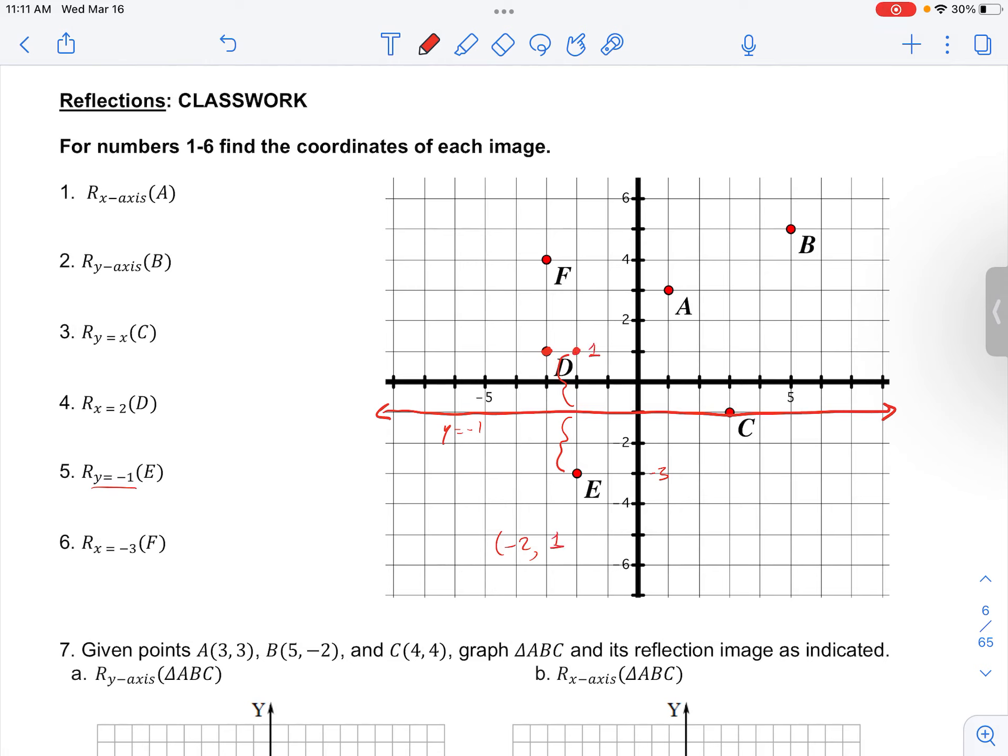So our new coordinates are negative 2, comma 1, and our image E prime would be right here at negative 2, 1.